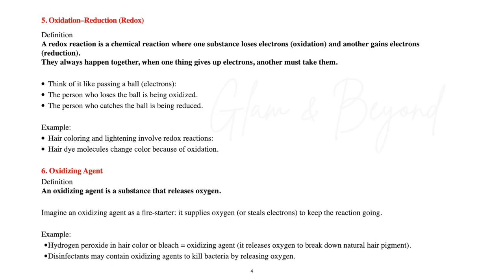Number five: oxidation-reduction, also known as redox. A redox reaction is a chemical reaction where one substance loses electrons (oxidation) and another gains electrons (reduction). They always happen together — when one thing gives up electrons, another must take them. Think of it like passing a ball: the person who loses the ball is being oxidized, and the person who catches the ball is being reduced.